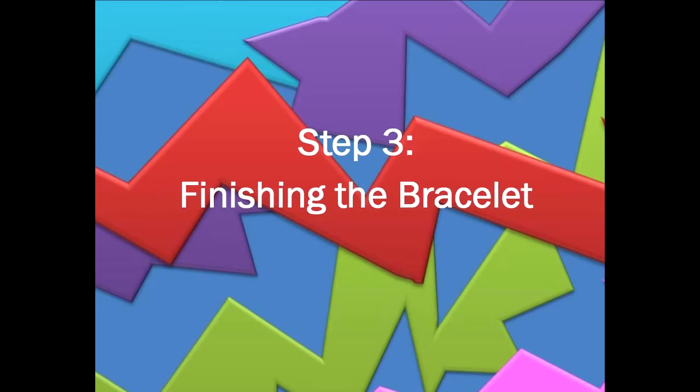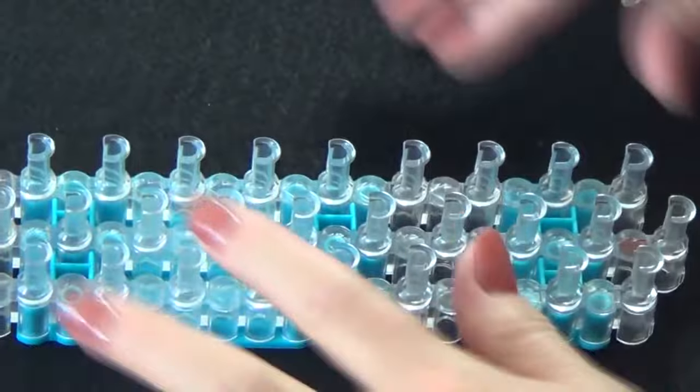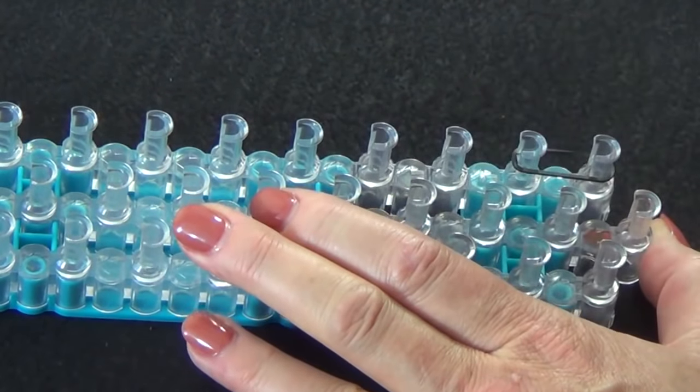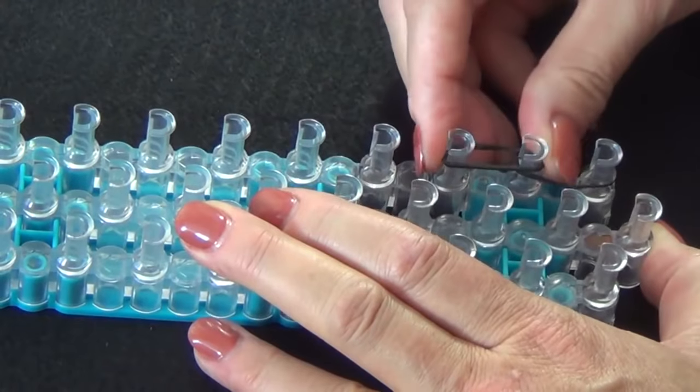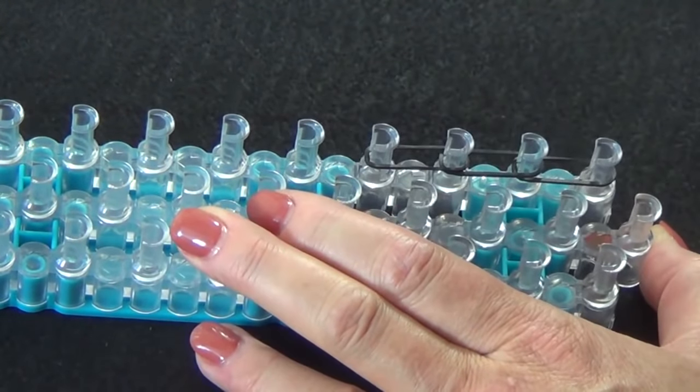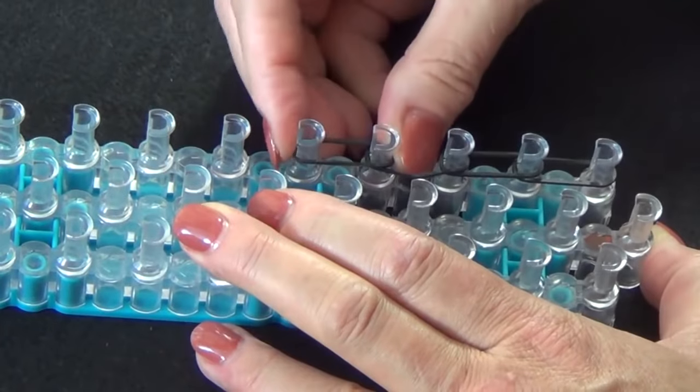And we're going to extend this bracelet. Grab your loom again. And we'll place six bands on this to make this bracelet a standard eight inch size bracelet. If your wrist is a little smaller, you may not want to use six bands.